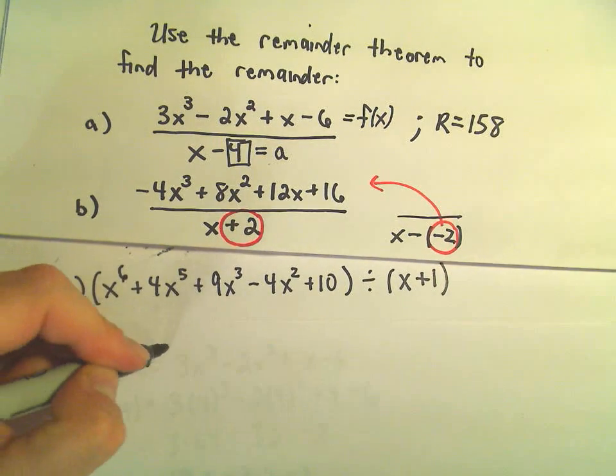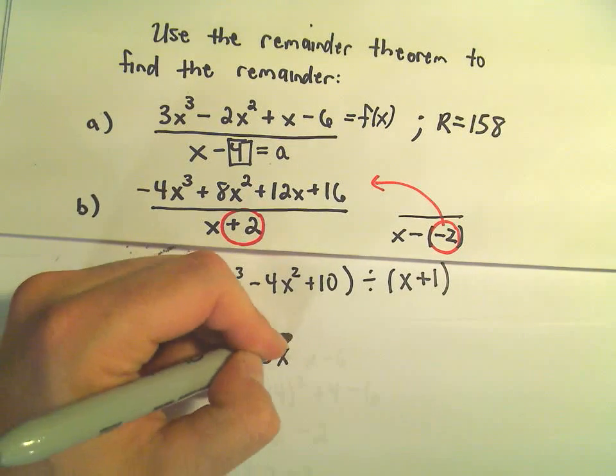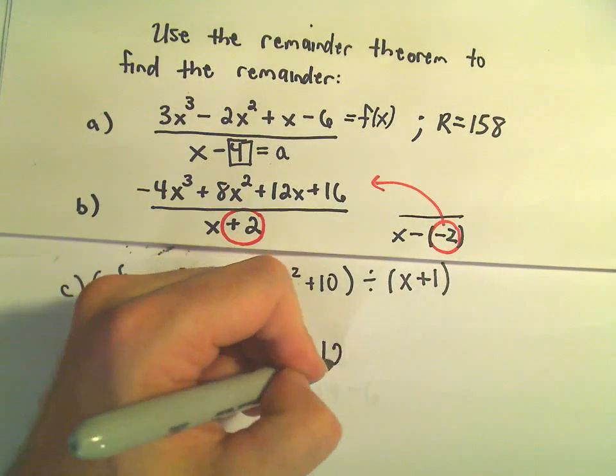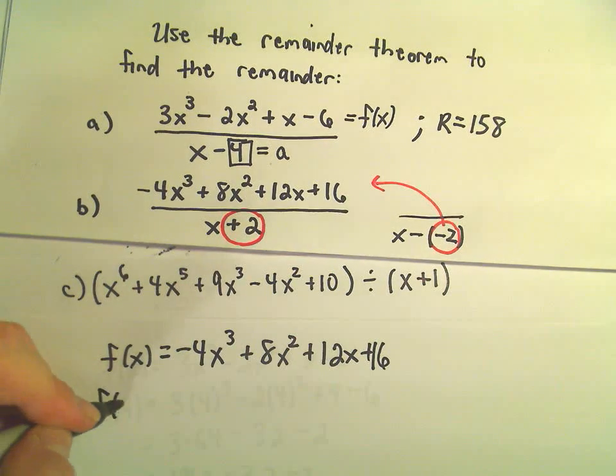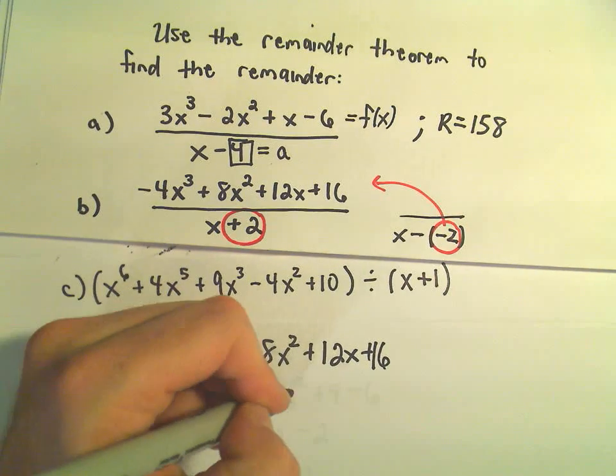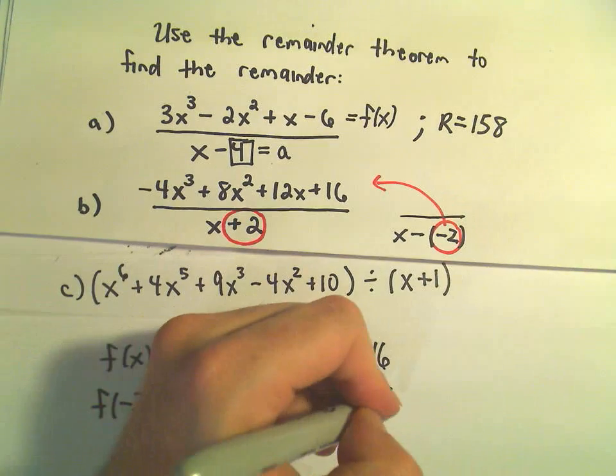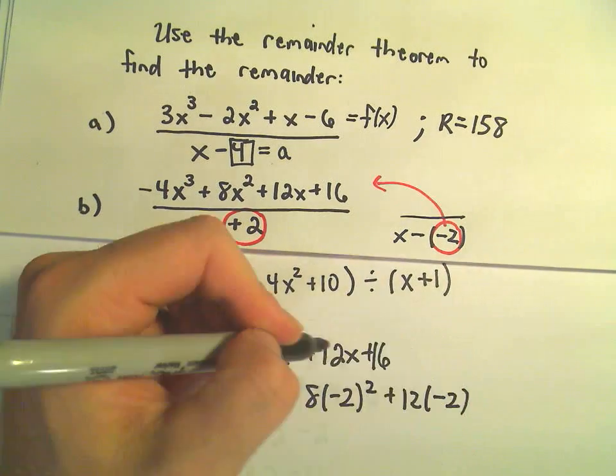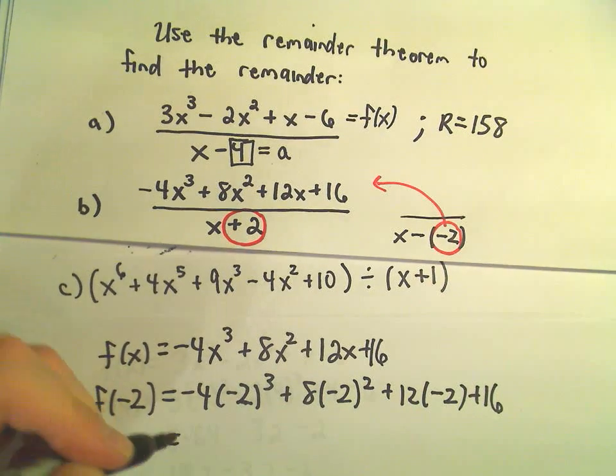If we let f(x) be -4x³+8x²+12x+16, if we plug in negative 2, we'll get -4(-2³) + 8(-2²) + 12(-2) + 16.